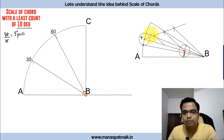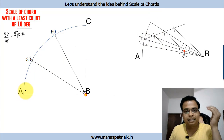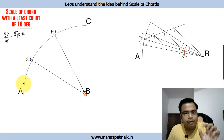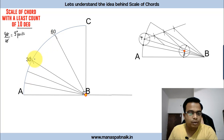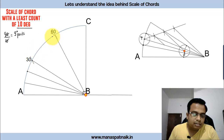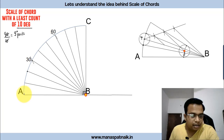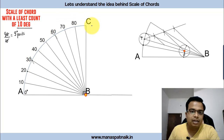Apply the same trisection process to the other 30-degree sections. As a shortcut, keep one leg of your compass at one arc point, cut an arc at the next position, and repeat — this achieves the three equal divisions efficiently. Finally, label the scale: this is 0 degrees at A, then 10, 20, 30, 40, 50, 60, 70, 80, and 90 degrees at C.